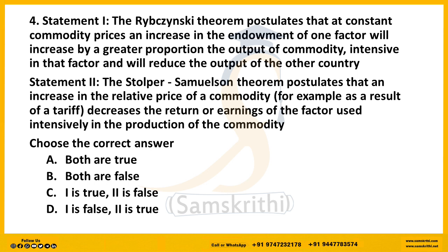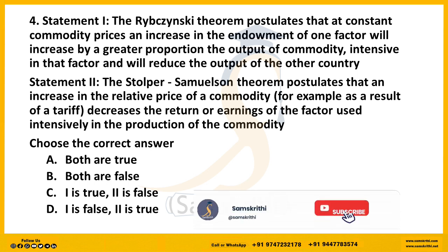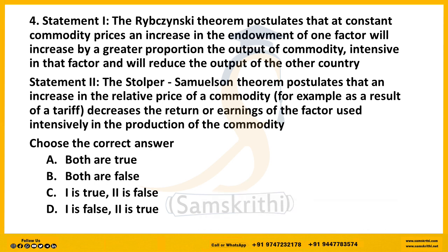The Rybczynski theorem postulates that at constant commodity prices, an increase in the endowment of one factor will increase by a greater proportion the output of the commodity intensive in that factor, and will reduce the output of the other commodity. This means the commodity in which the factor is intensive will expand, while the other contracts. Statement 1 is correct.